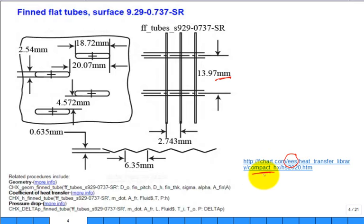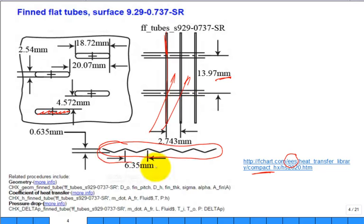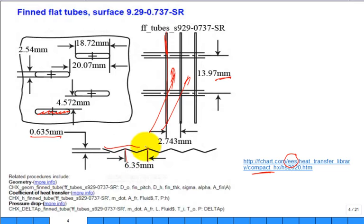This illustration shows the flat tube passages where the water flows, the fins between them, and the cross-flow direction for air. The fin isn't straight — it has kinks, promoting heat transfer. The data table provides fin pitch: 9.29 fins per inch. The fin metal thickness is 0.004 inch, and it's copper as stated in the problem.